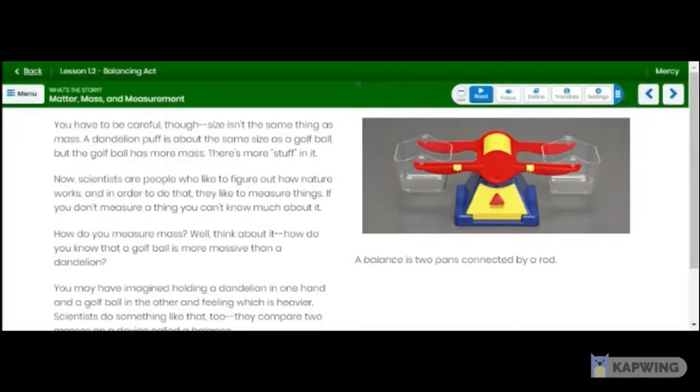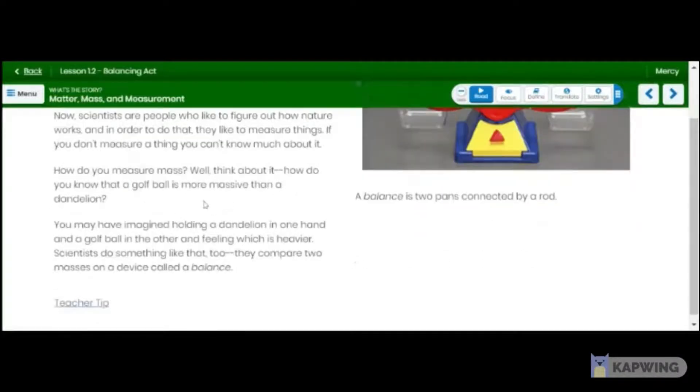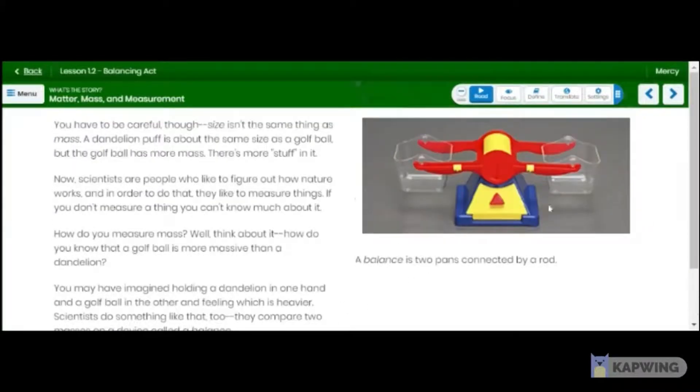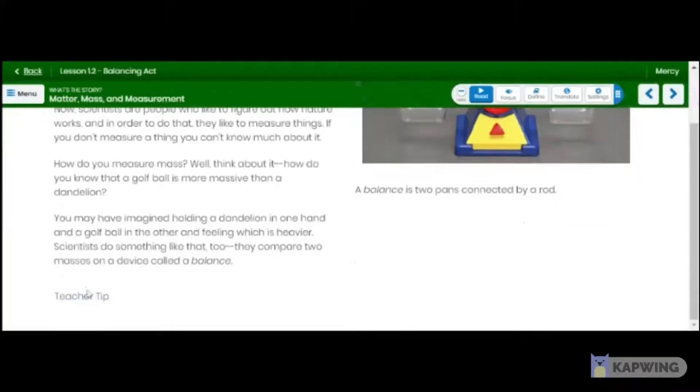How do you measure mass? Well, think about it. How do you know that a golf ball is more massive than a dandelion? You may have imagined holding a dandelion in one hand and a golf ball in the other and feeling which is heavier. Scientists do the same thing. They compare two masses on a device called a balance. So this is a balance. This is what a balance looks like. You should have received one from K-12. So a balance is two pans. Here are the two pans connected by a rod. This is the rod. And here's the hinge.